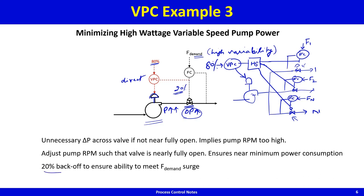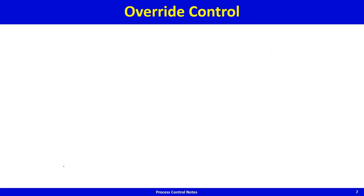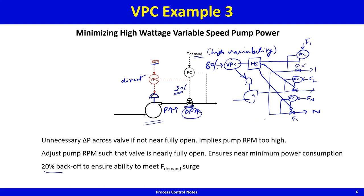This 20% back-off again ensures the ability to meet any surges in downstream customer demands, so customers can immediately get more flow. This is an example of valve position control combined with selective control.